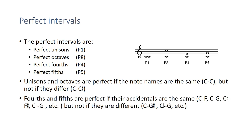Looking at fourths and fifths, if their accidentals are the same, then usually they will also be perfect. So C to F is a perfect fourth, C to G is a perfect fifth, C-sharp to F-sharp — since they're both sharps — is also perfect, and C-flat to G-flat is a perfect fifth since they have the same accidental. But if they have different accidentals, like C to G-sharp, that's no longer perfect. If they have the same accidental, fourths and fifths are usually perfect.